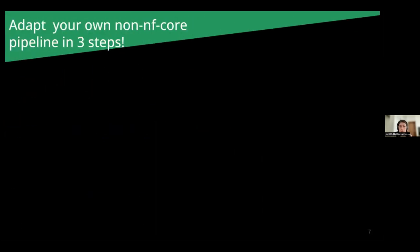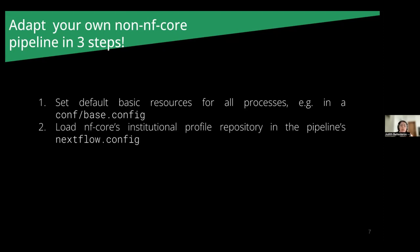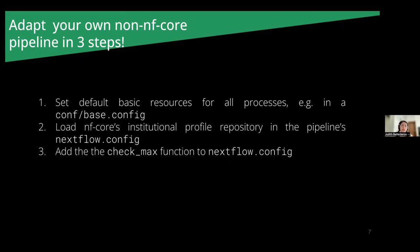How does this work? To include them, we need at least three steps. The first is to set the basic resources, and you can set them either for the entire pipeline or for an individual process. Then load the institutional profile repository and add the checkmax function to ensure that your task resource requests do not exceed the maximum limits defined in the institutional profile. And finally, run it.